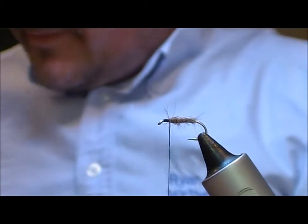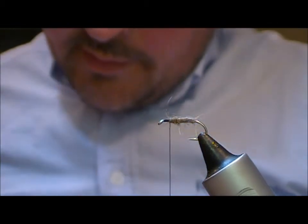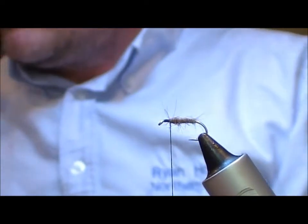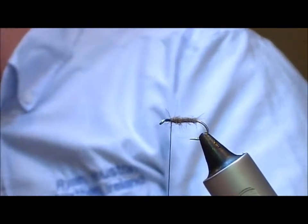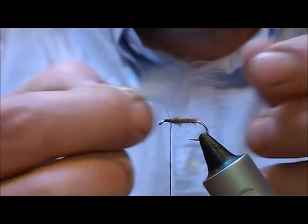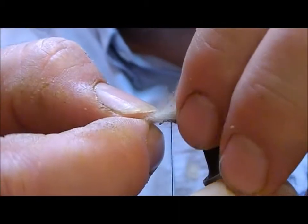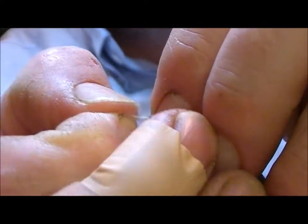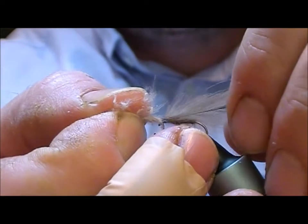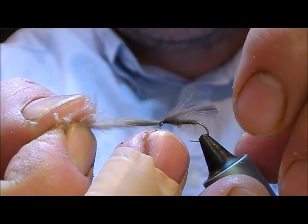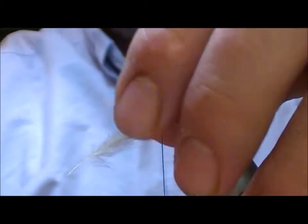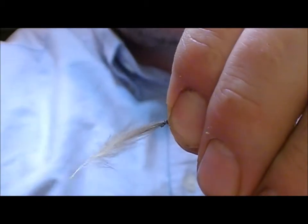Okay, it's a very simple fly. The underwing on this is just CDC. I'll take a CDC plume and tie it on with a couple of loose wraps like that, and then I'll pull the CDC feather forward until I end up with roughly about the length of the hook. I pinch it in place and tighten up those wraps.